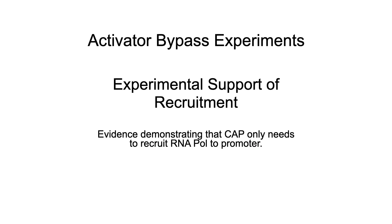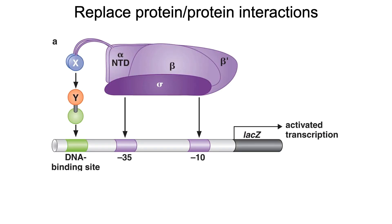The experiments that support the idea that CAP sticks to the alpha carboxy terminal domain and is not an allosteric activator are called activator bypass experiments. This is experimental support of the recruitment model. They reasoned: if the CAP protein is doing nothing more than sticking to the alpha carboxy terminal domain, then we should be able to replace both of those components with two other things that stick together, and it should still work.